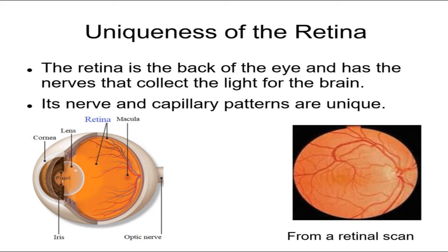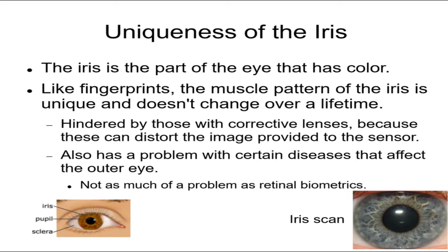A retinal scan is a form of biometrics — it's a part of the human body that is unique to each person and can be used to identify them. There is also the iris scan, which is more modern. Retinal scans have been around for a little while; iris scans are a newer development.